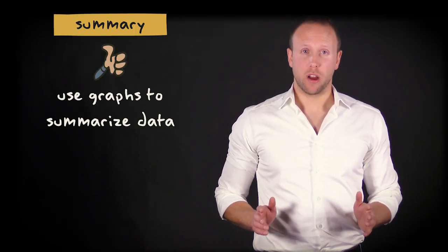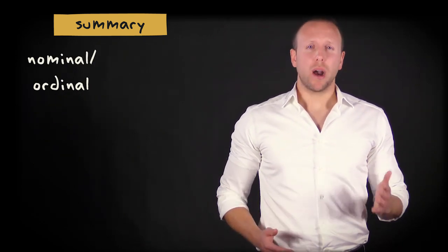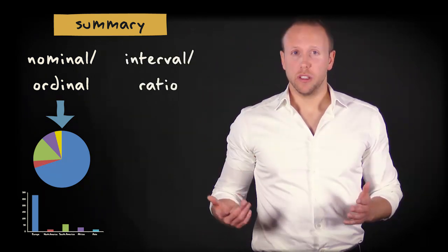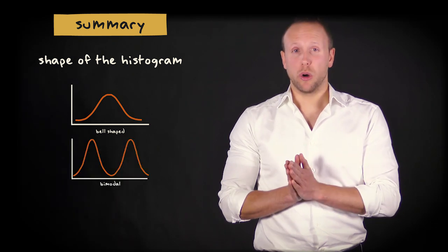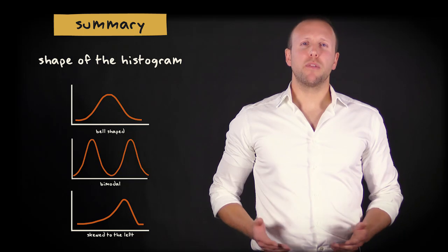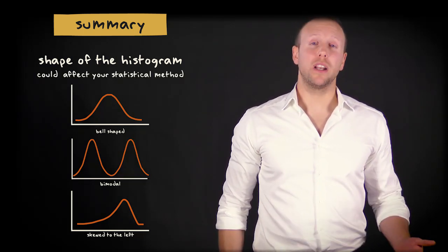The most important lesson to take home from this video is that it's always a good idea to summarize your data by means of graphs. If you're dealing with nominal or ordinal variables, you should make a pie chart or a bar graph. And if your variable of interest is an interval ratio variable, you should make a histogram. And never forget to look at the shape of your variable: Is it bell-shaped and symmetric? Is it unimodal or bimodal? Is the distribution skewed? Assessing the shape of a distribution is of essential importance because it could affect the statistical methods you are going to employ later on.